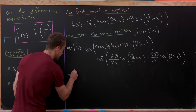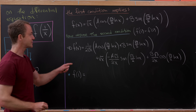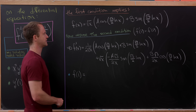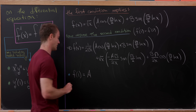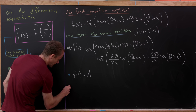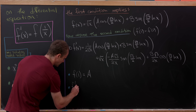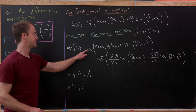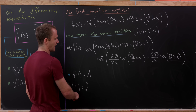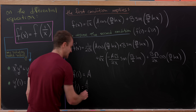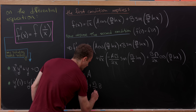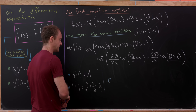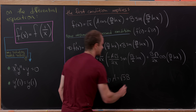Evaluating at x equals 1: the natural log of 1 is 0, so cosine of 0 is 1 and sine of 0 is 0. Therefore f of 1 simplifies to simply a. For f prime of 1, the sine terms vanish, leaving a over 2 from the first part plus root 3 times b over 2 from the second part. Equating f prime of 1 to f of 1, we get a over 2 plus root 3 b over 2 equals a, which easily gives a equals root 3 times b.